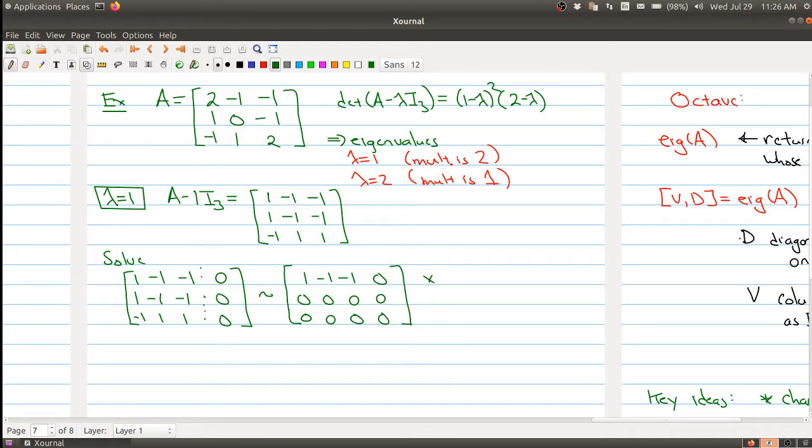There's a lot of zeros in this matrix, and what we get is that x2 and x3 are free. So we do our usual trick: we set x2 to be s and x3 to be t. Then the first equation becomes x1 minus x2 minus x3 equals 0, so x1 equals x2 plus x3, which equals s plus t.